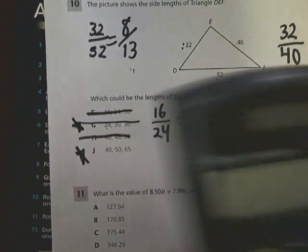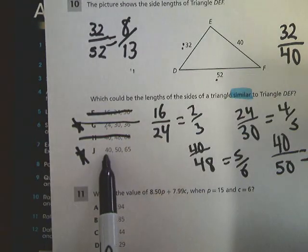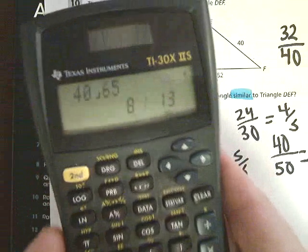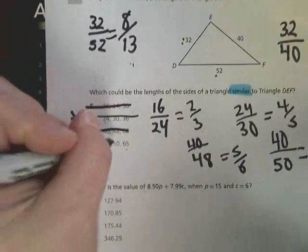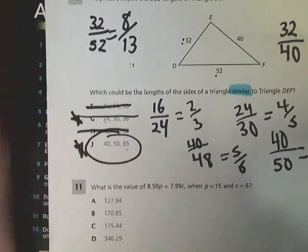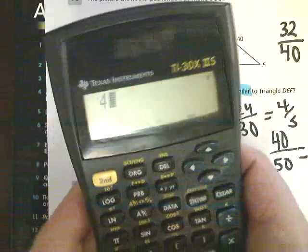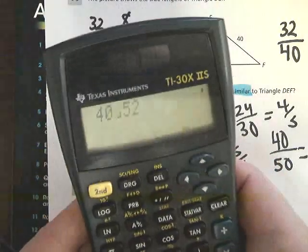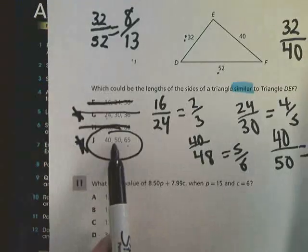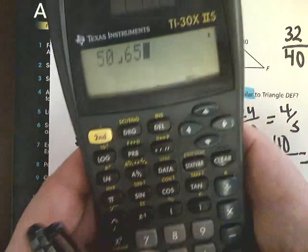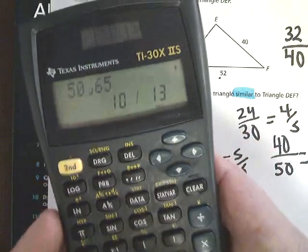I'm going to try out this last one. My smallest side here is 40 and my largest side is 65. And there it is, 8 over 13, just like I needed. Also, if you do the middle to the biggest side, you'd find the same relationship. 40 over 52 gives me 10/13, whereas 50 over 65 also gives me 10/13.